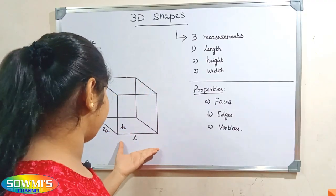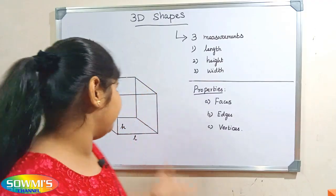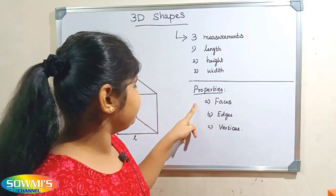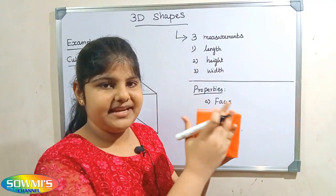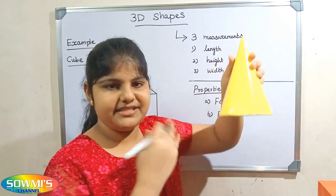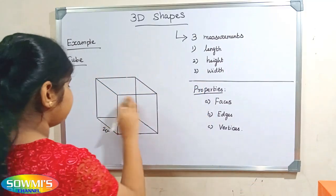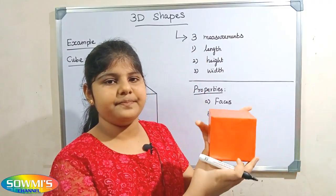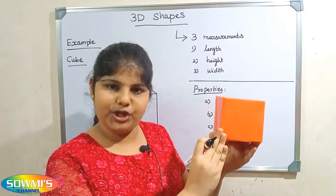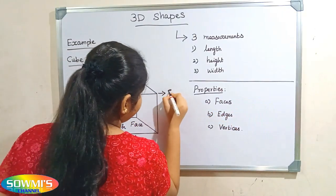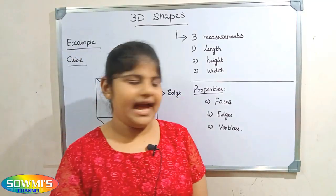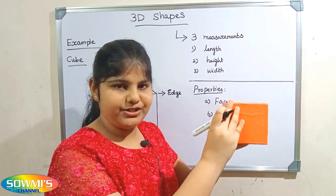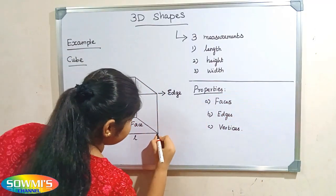Do you know how to find a 3D shape? It's quite simple. We find the 3D shape by their properties. There are three properties: faces, edges and vertices. Faces is a flat surface or a curved surface on a 3D shape. When two faces meet at a line segment, it is called an edge. When three edges meet at a point, it is called a vertex, which is also called a corner.